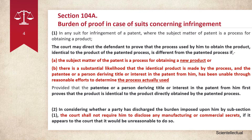Section 104A: In any suit for infringement of a patent, where the subject matter of the patent is the process for obtaining a product — that is, the patent is related to a process — the court may direct the defendant to prove that the process used by him to obtain the product identical to the product of the patented process is different from the patented process. In this case, the burden of proof shifts from the patent holder to the defendant. He needs to prove that the process used by him to obtain the identical product is different from the patented process, although the outcome product is identical in both cases.